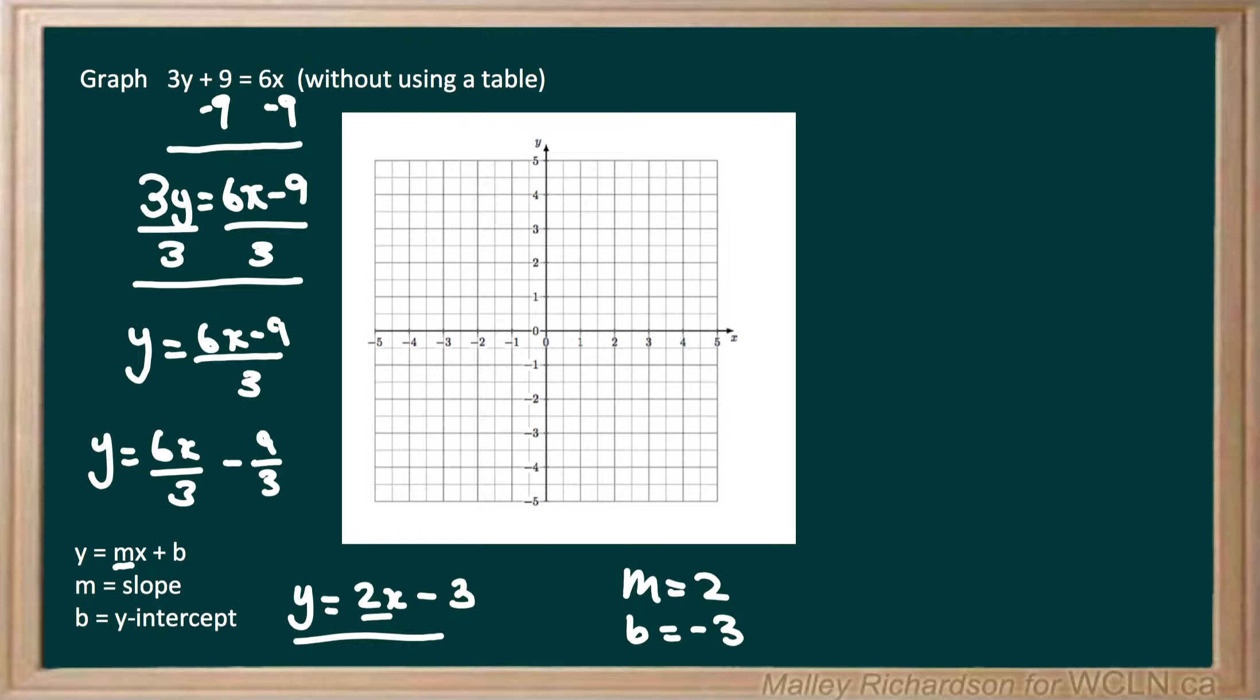So now that we know our slope and our y-intercept, let's get to graphing. We'll first start by placing our y-intercept on the graph. Our y-axis is vertical, so on the vertical axis we'll find negative 3 and put a dot.